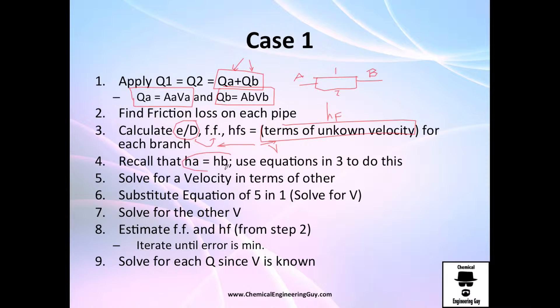So recall that I told you that this always apply for parallel flows, so HA, or actually it's H1, and H2 apply. We can calculate equations in here, and in here we can make them equal. Since we can equate this, or make them equal, we can solve for velocity in terms of each other.